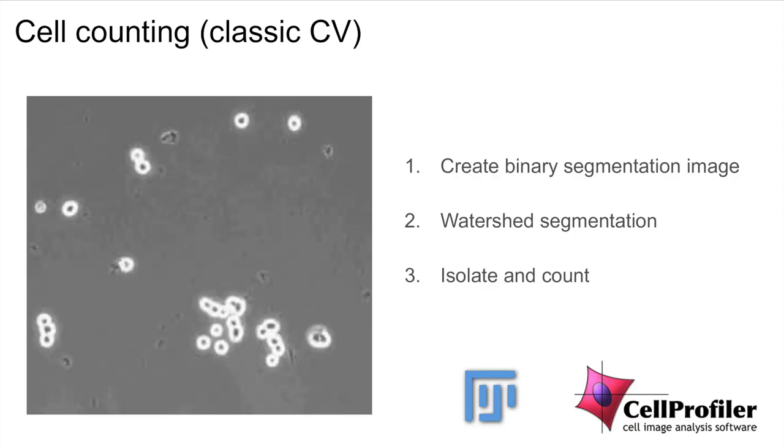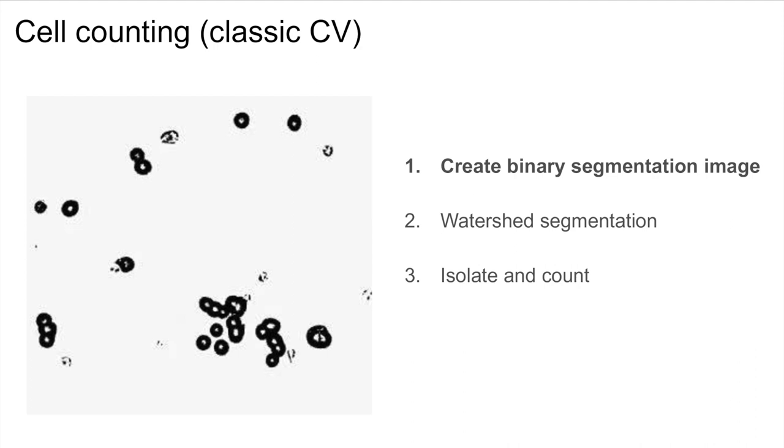First, let's look at a classic approach to cell counting, which is implemented in tools such as ImageJ or Cell Profiler. First, a binary segmentation is created, possibly by thresholding.